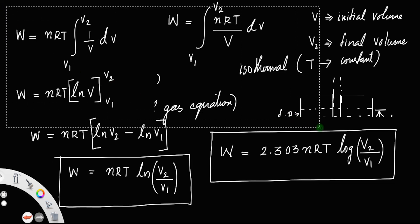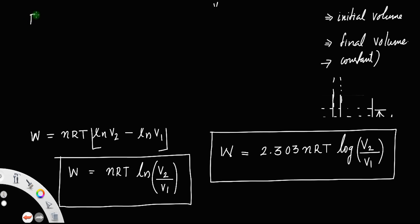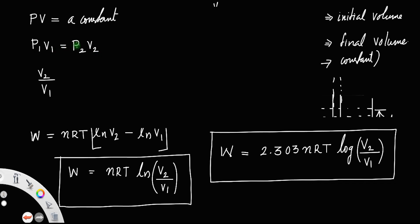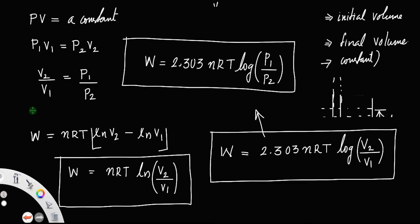Also, for an isothermal process, temperature remains constant, so we have PV equal to a constant, or P1V1 equals P2V2. Therefore V2 by V1 is equal to P1 by P2. So this expression can also be written as W equals 2.303 nRT log(P1 by P2), where P1 is the initial pressure and P2 is the final pressure.